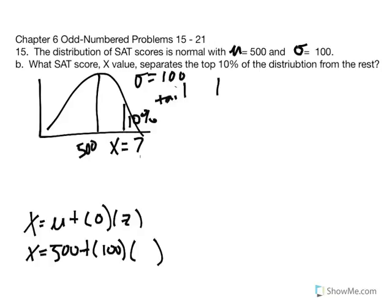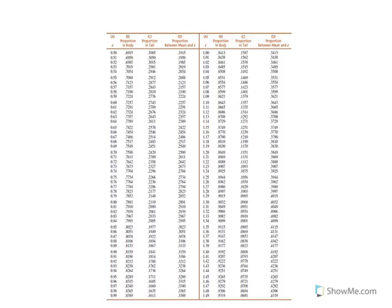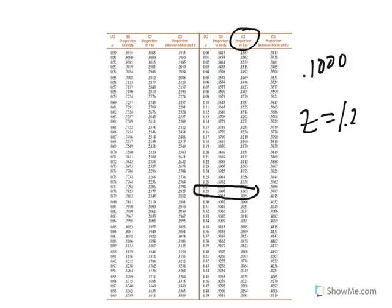We convert 10% to a proportion: 10 divided by 100 gives us 0.100. That's the value we look for in the tail to find our Z score. Looking for proportion 0.1000 in the tail, we find the closest value is 0.1003, and the corresponding Z score is 1.28.